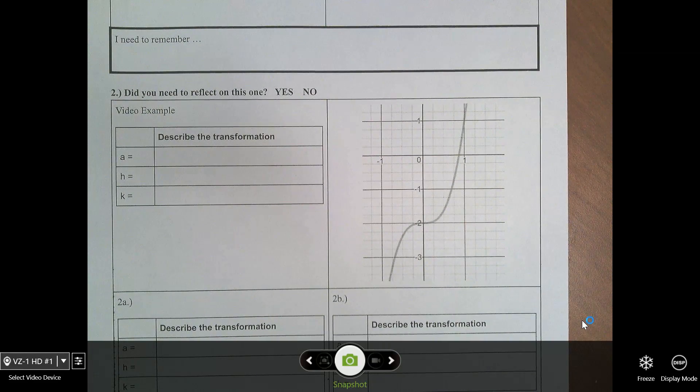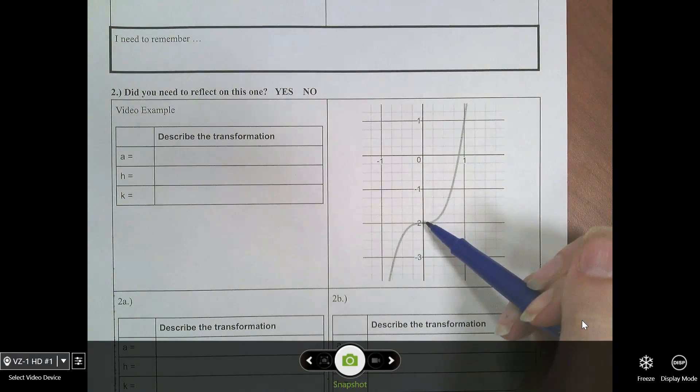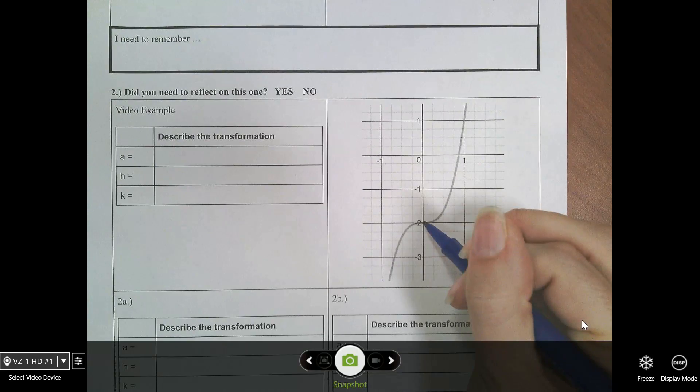So, the first thing we're going to do is name the a. If you look at your a, h, and k foldable, you'll remember that we don't start at 0, 0 to name a. We have to start at a specific point depending on the function. So, since this is a cubic function, we're going to start at this turning point right here.